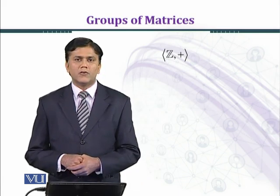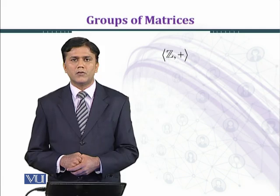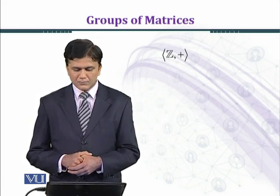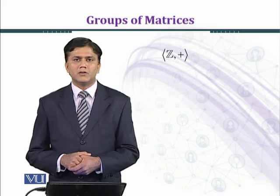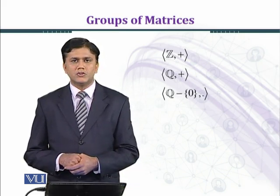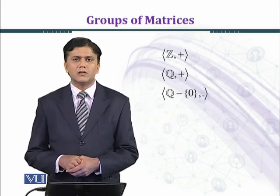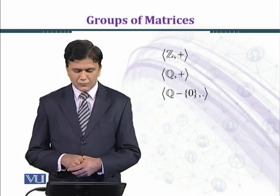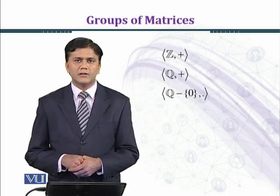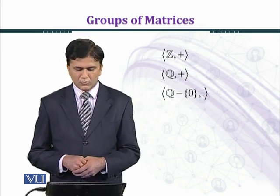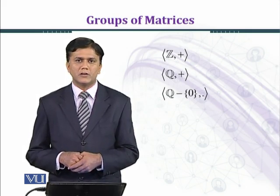Z under addition forms a group, but the set of integers under multiplication does not form a group — for instance, the multiplicative inverse of 2 is 1/2, which is not an integer. So Z together with addition and multiplication does not form a field. However, the set of rational numbers under addition is an abelian group, and non-zero rational numbers under multiplication are also an abelian group. Therefore, the set of rational numbers together with addition and multiplication forms a field, since distributive laws hold.